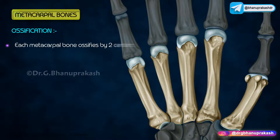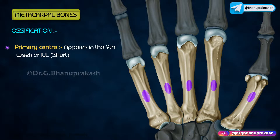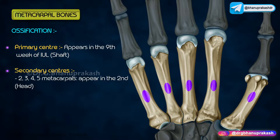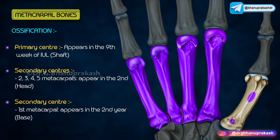Ossification: Each metacarpal bone ossifies by two centers — one primary for the shaft and one secondary for the head. The primary center appears in the ninth week of intrauterine life. Secondary centers for the second, third, fourth, and fifth metacarpals appear in the second year and fuse by 16 years. The secondary center for the first metacarpal appears in the second year and fuses by 18 years.